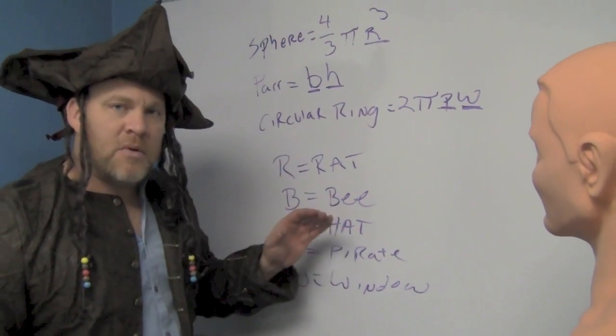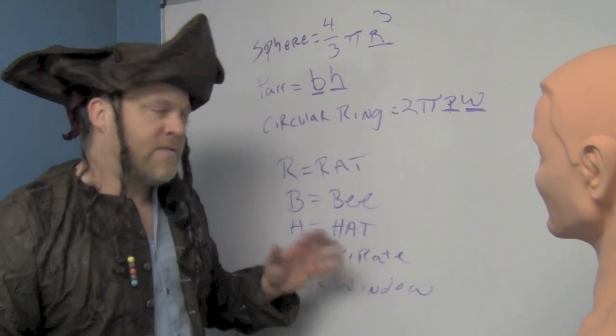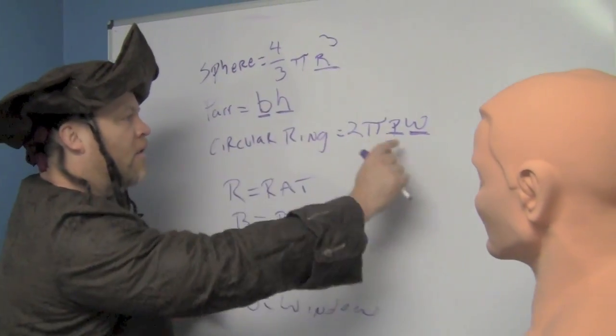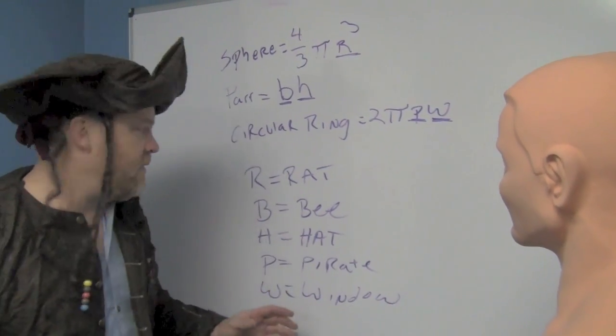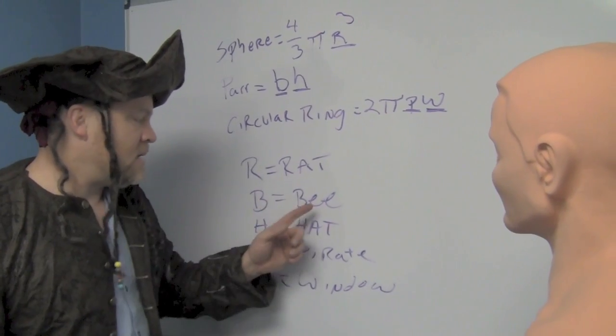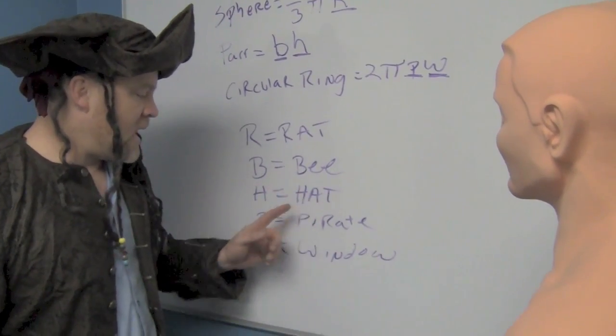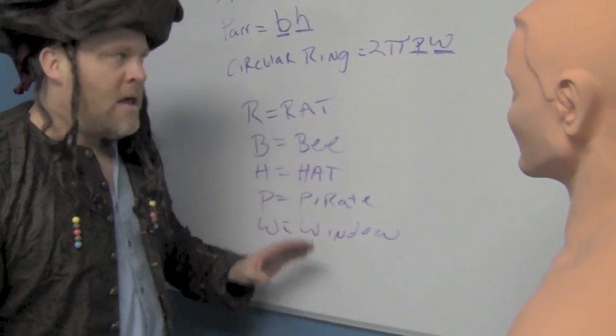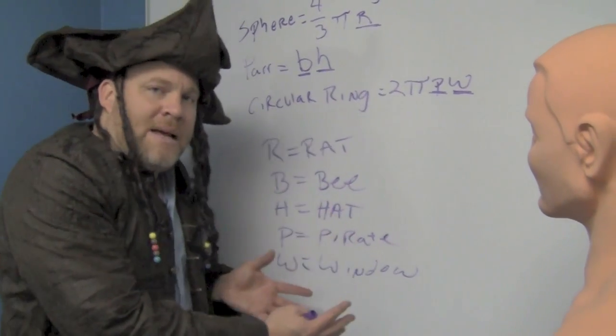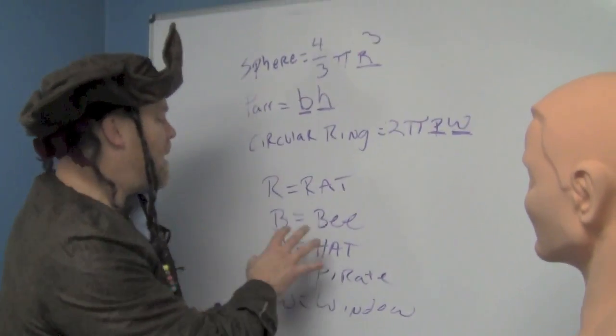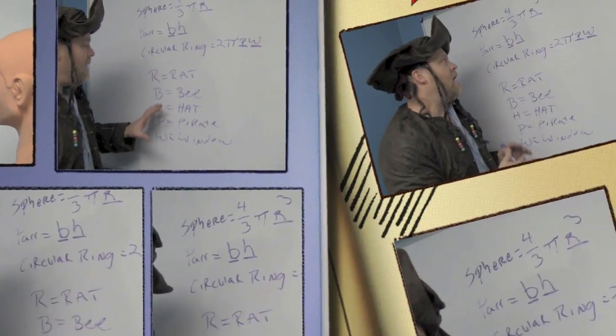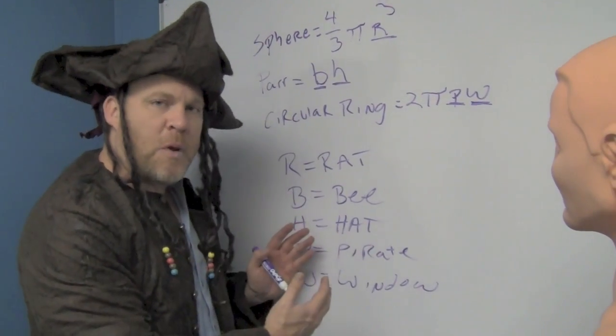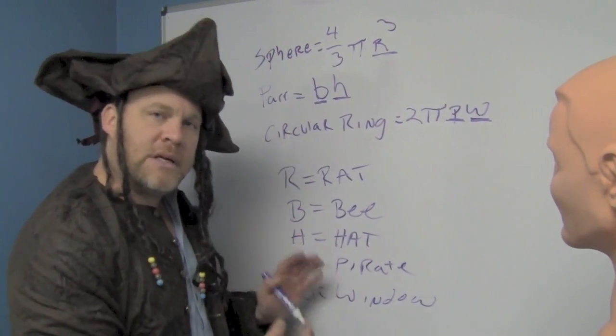So now we have our variables. If you're looking at your math formulas, the first thing you do is go through and look at all the variables, then create pictures for the variables. R is a rat, B is a bee, H is a hat. For me, P is a pirate and W is a window. After you have your variables created, then it's just simple. You just go back and make stories. Every math formula isn't a math formula anymore—it's a story, and stories are easy to remember.